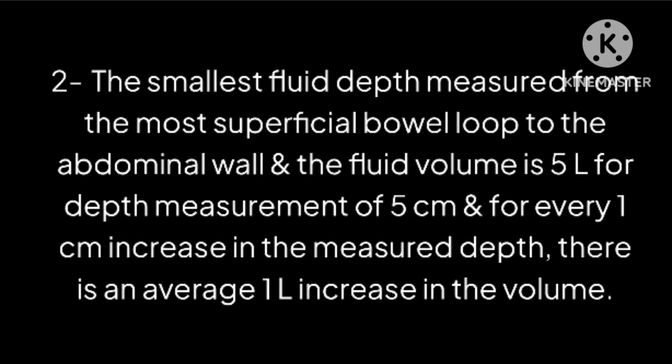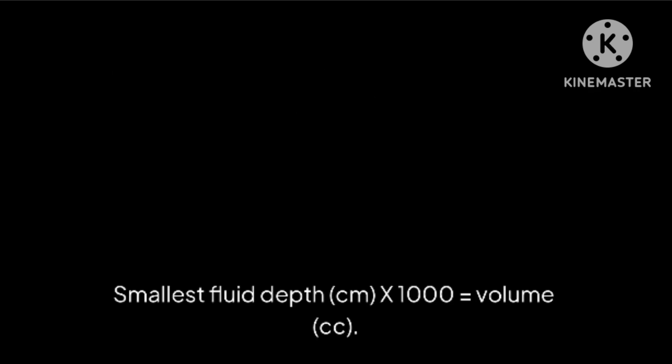Method 2: Smallest fluid depth. Measure the smallest fluid depth from the most superficial bowel loop to the abdominal wall. The fluid volume is 5 liters for a depth measurement of 5 centimeters, and for every one centimeter increase in the measured depth, there is an average one liter increase in volume. Smallest fluid depth in centimeters multiplied by 1000 equals volume in cc.